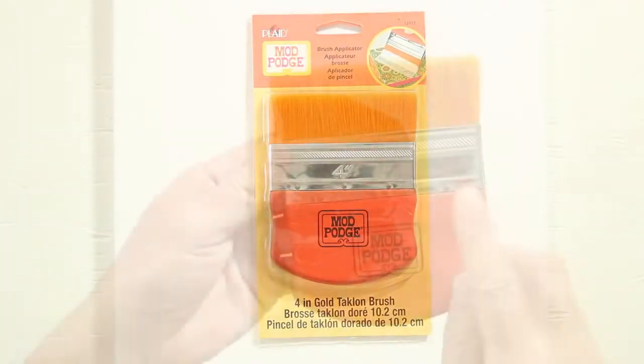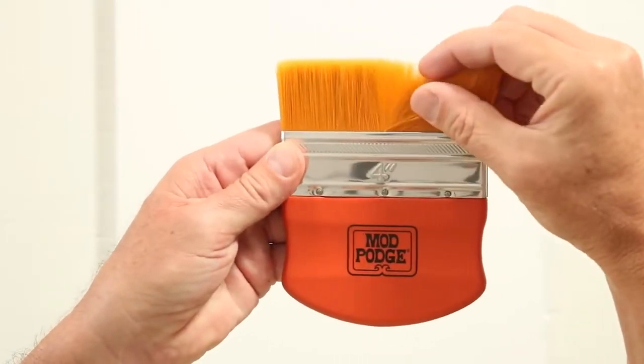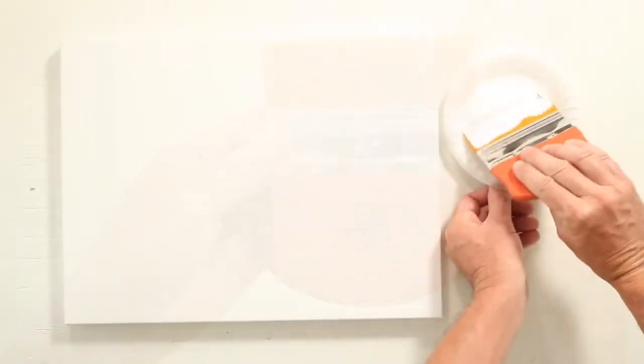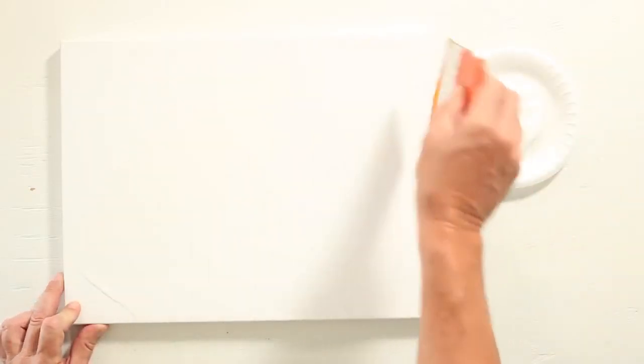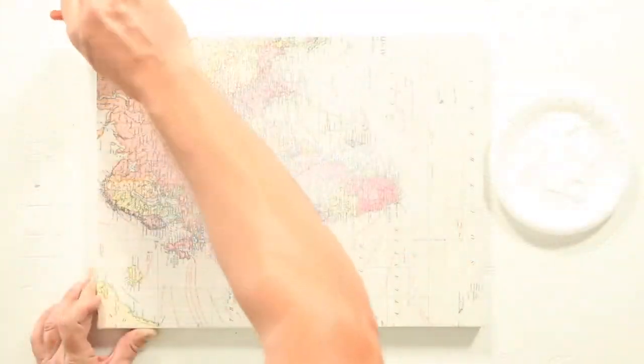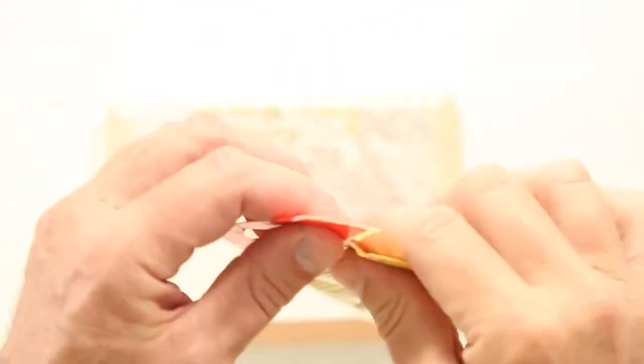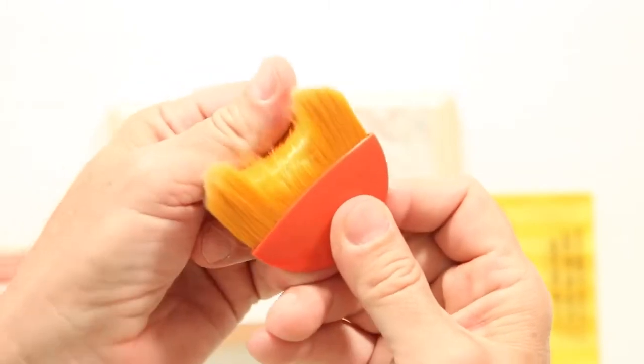The 4 inch brush applicator has gold Taclon bristles. They apply smooth without brush marks. The handle is comfortable to hold and is perfect for large surfaces. The 2 and a quarter inch brush has the same bristles as the 4 inch brush. The smaller size makes it perfect for small projects.